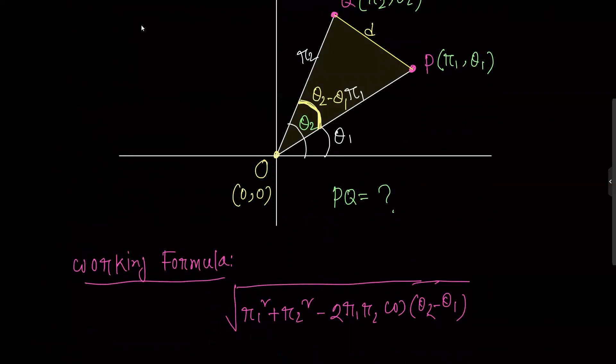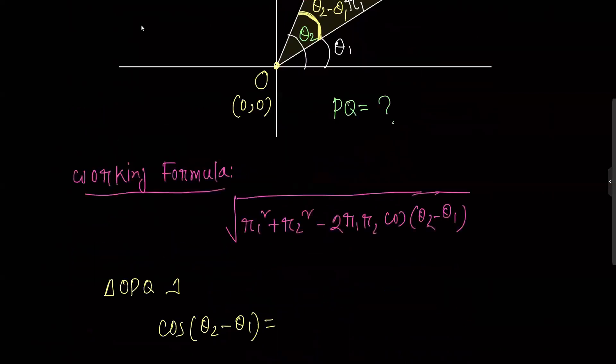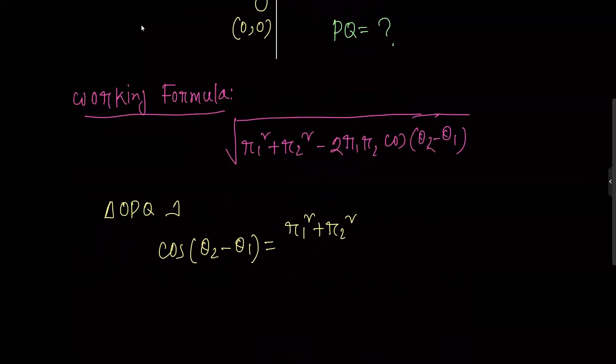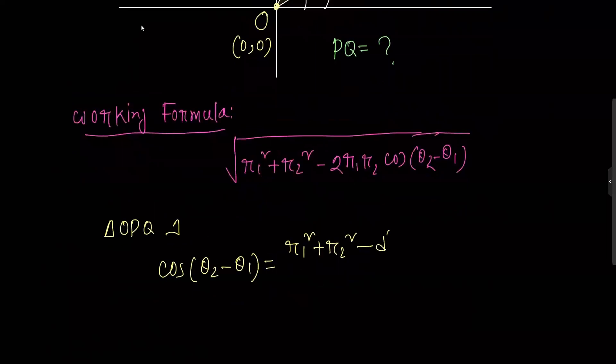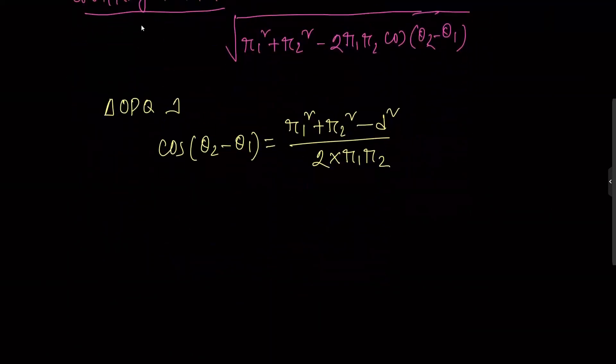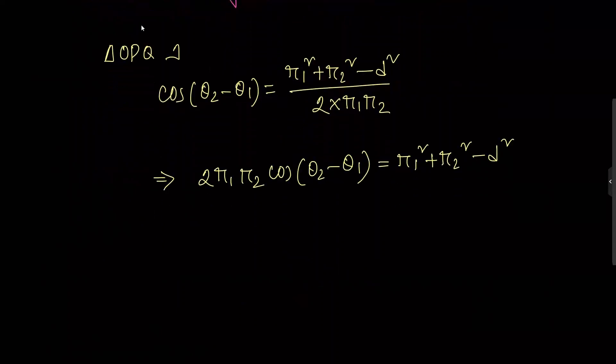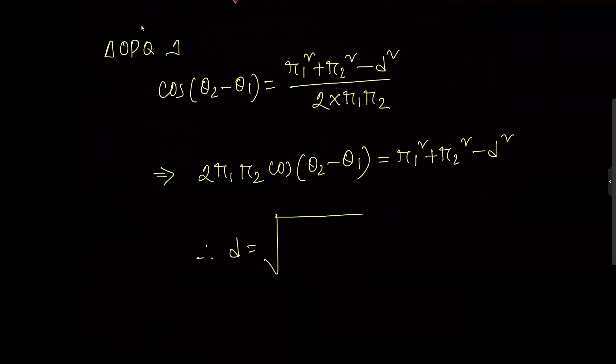Now applying the cosine formula to triangle OPQ: cosine of theta2 minus theta1 equals r1 squared plus r2 squared minus d squared, divided by 2 times r1 times r2. Therefore, 2 r1 r2 cosine of theta2 minus theta1 equals r1 squared plus r2 squared minus d squared.